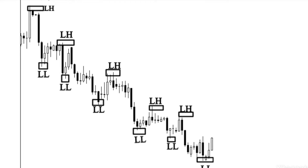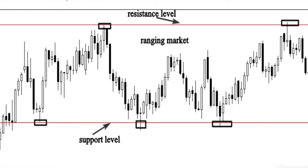Now let's go to the chart sample for the two remaining market types: the choppy market and the ranging market. Here we are on the sample chart of a ranging market. As you can see, the two red lines represent the resistance level and the support level. Ranging markets are pretty straightforward — they are often called sideways markets or sideways trends because their neutral nature makes them appear to drift horizontally to the right.